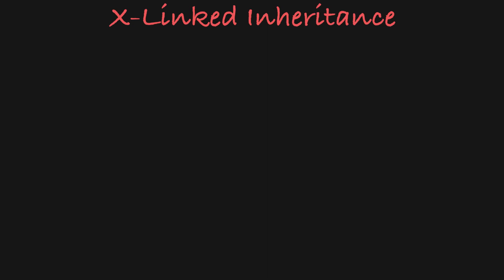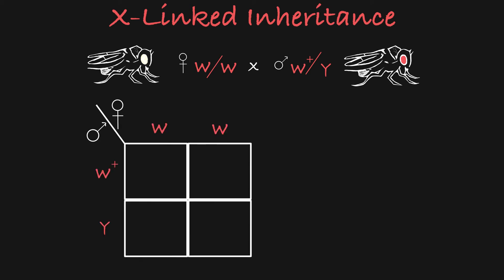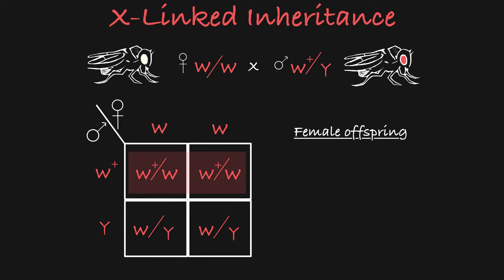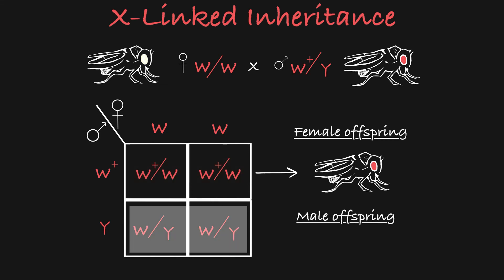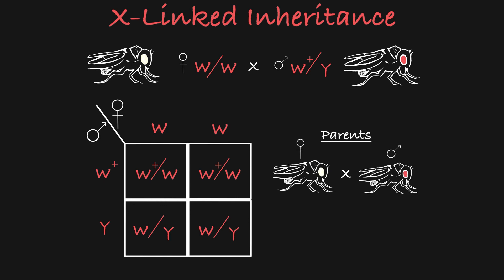Let's take a look at one more example. In this case, let's have a white-eyed female that is homozygous for the recessive W-allele, and a male fly with red eyes, which means he has the dominant W-plus allele on his X chromosome. When we set up the Punnett square for this cross and fill in the offspring genotypes, we can see that all female offspring are heterozygous and therefore have red eyes. All of the male offspring get the recessive W-allele on the X chromosome from the female parent, so all of the male offspring will have white eyes. So we have crossed a white-eyed female to a red-eyed male, and we have offspring that are either red-eyed females or white-eyed males.